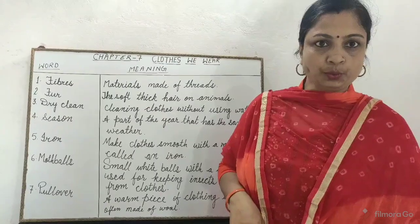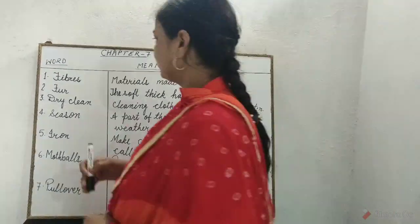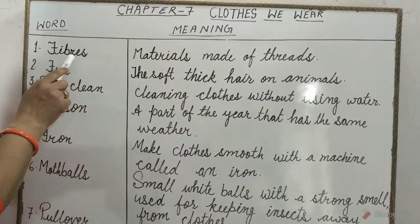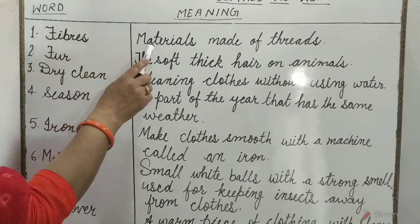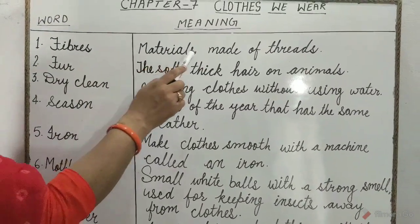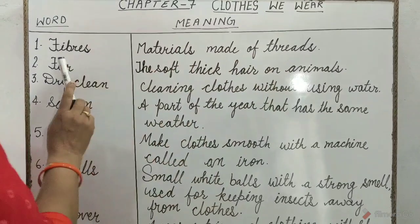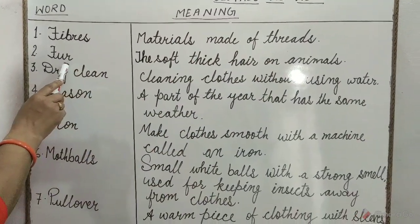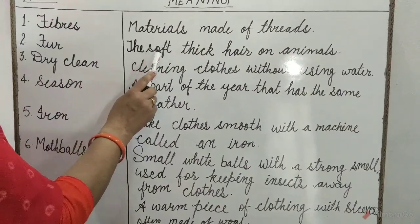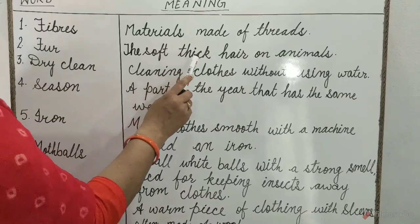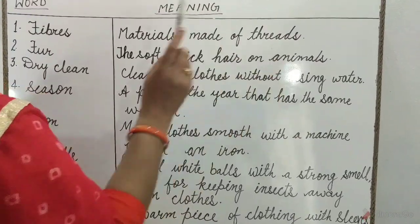Let's start with the meanings. 1. Fibers: materials made of threads. 2. Fur means the soft, thick hair on animals.